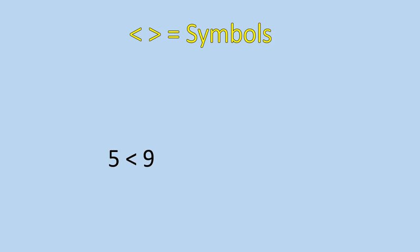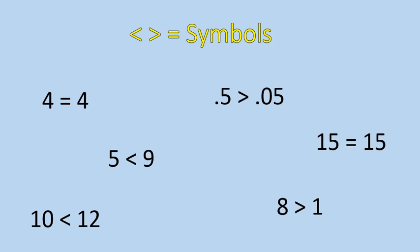So let's go ahead and take a look at these symbols. Here's an example. Five is less than nine. Four equals four. Eight is greater than one. Ten is less than twelve. Point five is greater than zero point zero five. And fifteen is equal to fifteen. So those are some examples of using these symbols. Depending on what number's on the left and what number's on the right, we would use the less than or greater than symbol. And notice that if we think about it in terms of like a mouth, it's always opening towards eating the larger number.